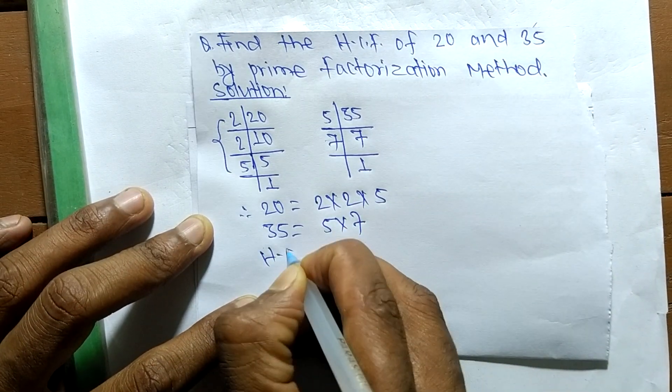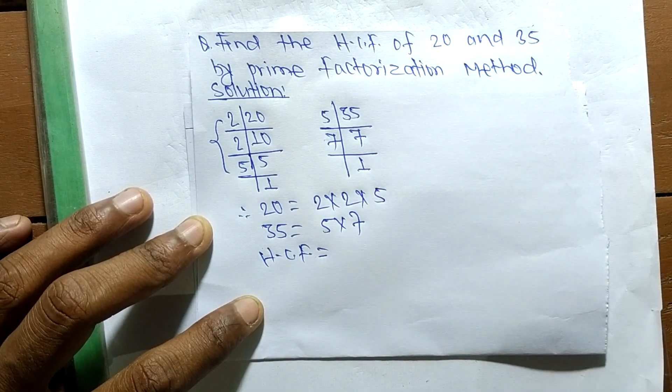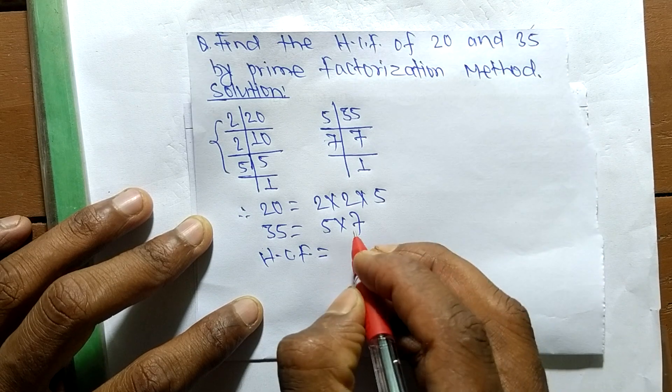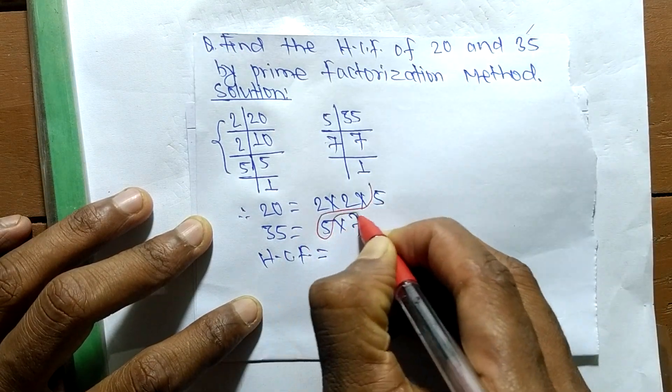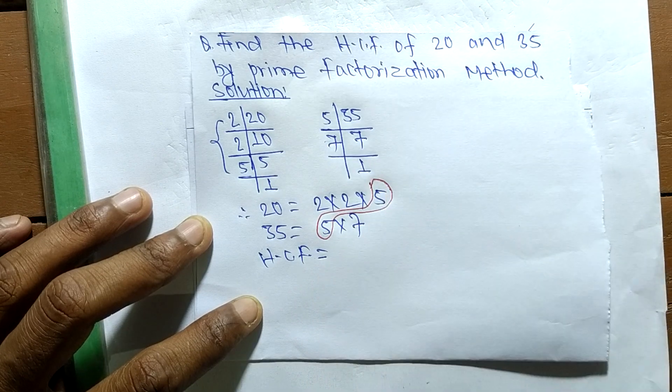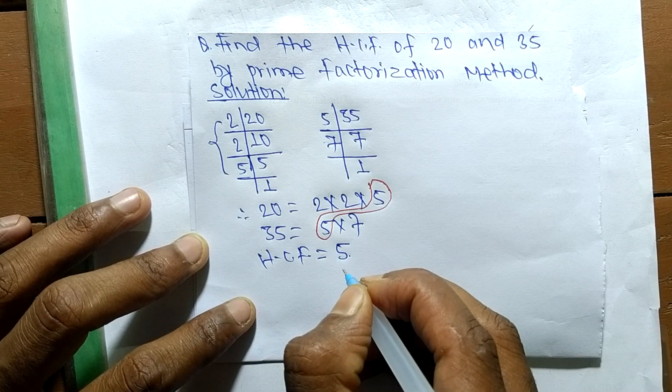So the HCF is equal to... Now we have to find out the common factors in the prime factors of 20 and 35. The common factor here is 5, so the HCF equals 5.